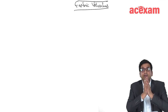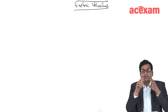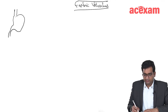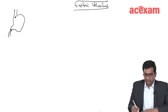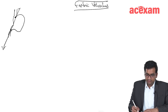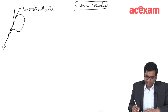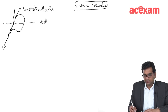Regarding the stomach and regarding the volvulus. This is a normal stomach. In the stomach, this is the G-E junction, this is the antropyloric region, this is the axis of the stomach — the longitudinal axis of the stomach. And this is known as the vertical axis of the stomach. This is normal.